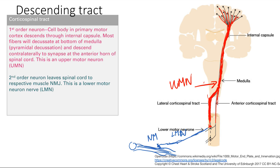The neuron that exits the anterior horn and goes to the muscles is called the lower motor neuron. It synapses at the muscle at the NMJ — the neuromuscular junction. So to summarize the corticospinal tract: it travels from the motor cortex down through the internal capsule, decussates at the medulla, synapses at the anterior horn as the upper motor neuron, and then the lower motor neuron goes all the way to the muscle, innervating it at the neuromuscular junction. That's it for the spinal cord tracts.